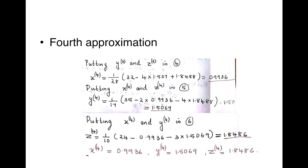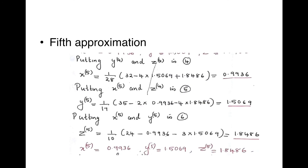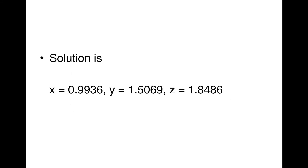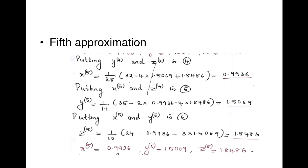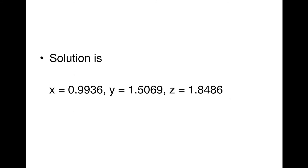A fifth approximation is also calculated. Comparing x⁴, y⁴, z⁴ with x⁵, y⁵, z⁵, we get almost the same values, so we can stop the procedure. The solution for the system of linear equations is the values obtained in the fifth approximation. Thank you.